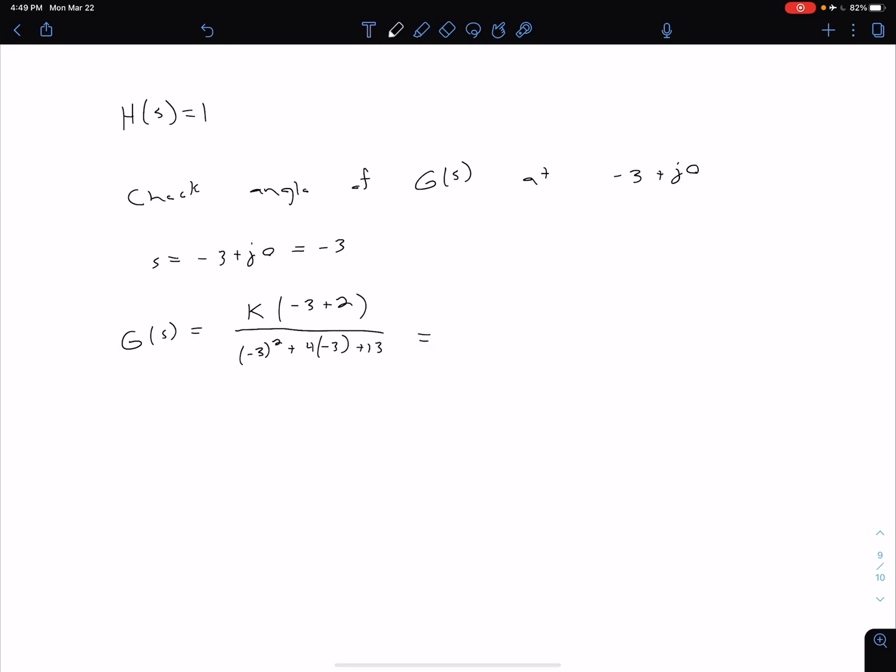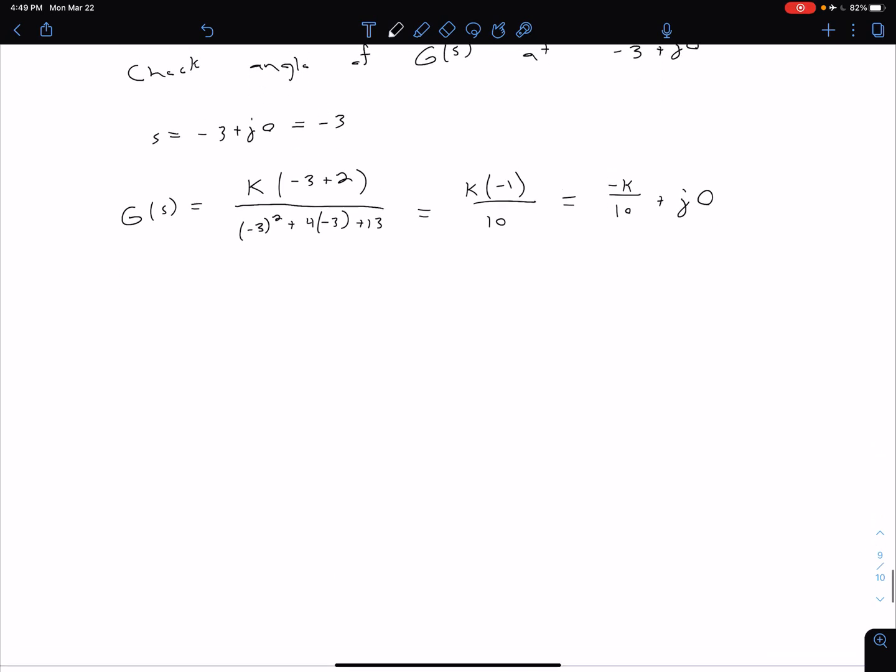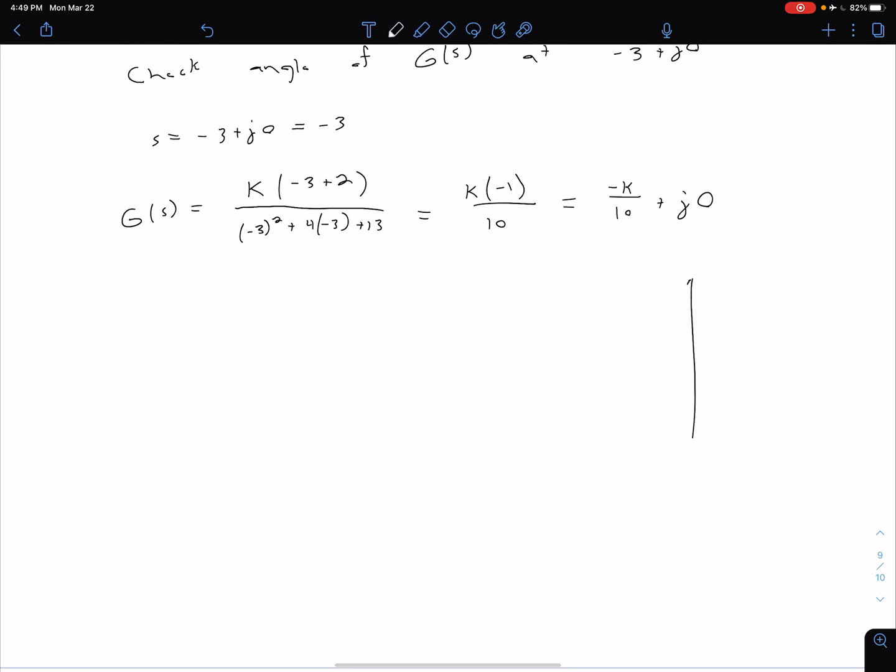If we evaluate that, we get K(-1)/10, or we can write it in full rectangular form as -K/10 + j0. It can be helpful to think about what this looks like in the complex plane.